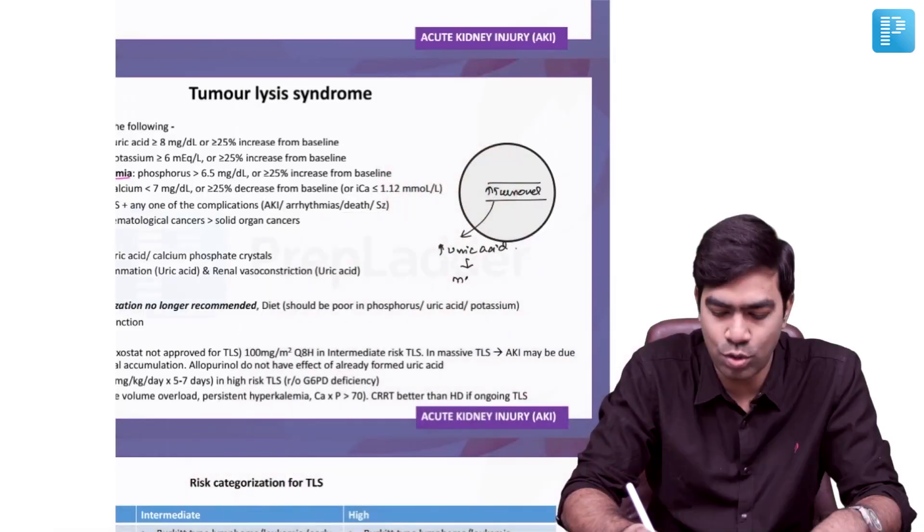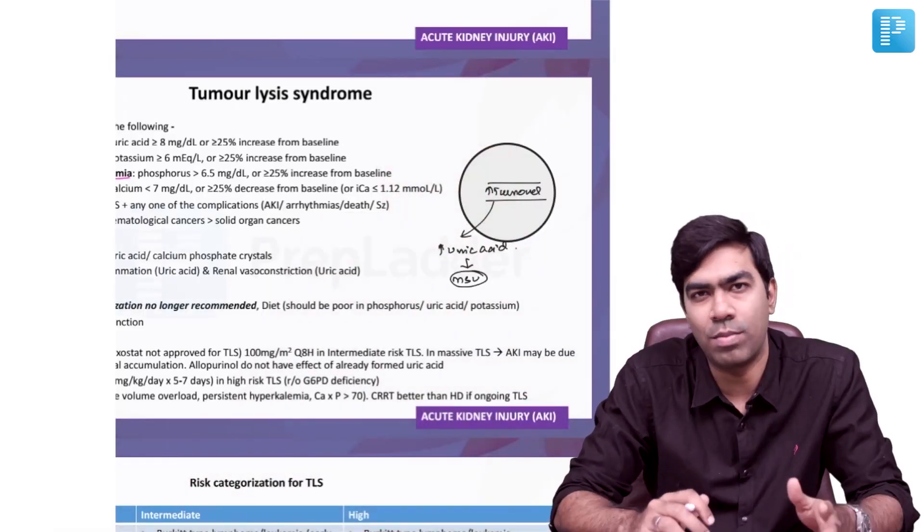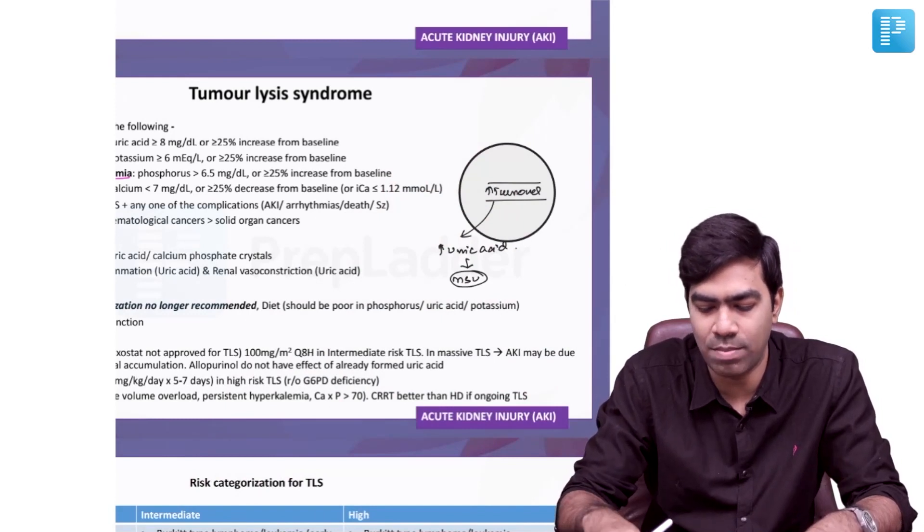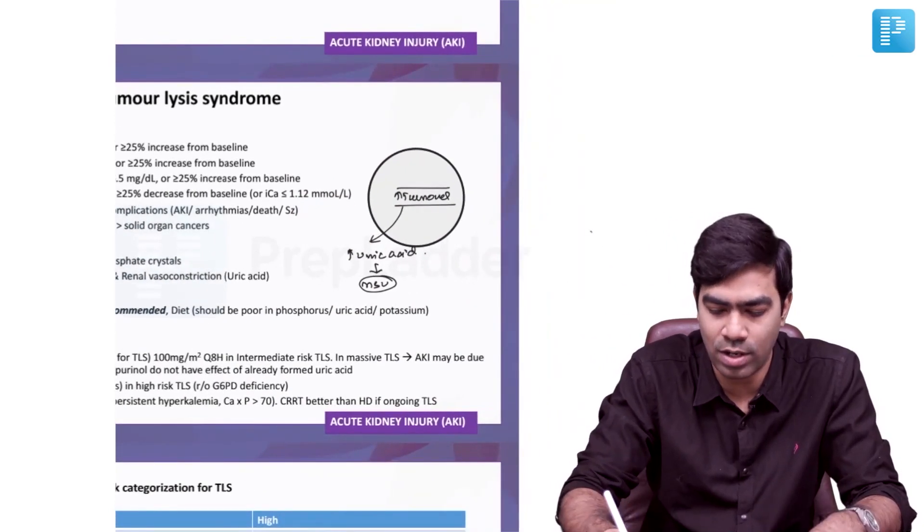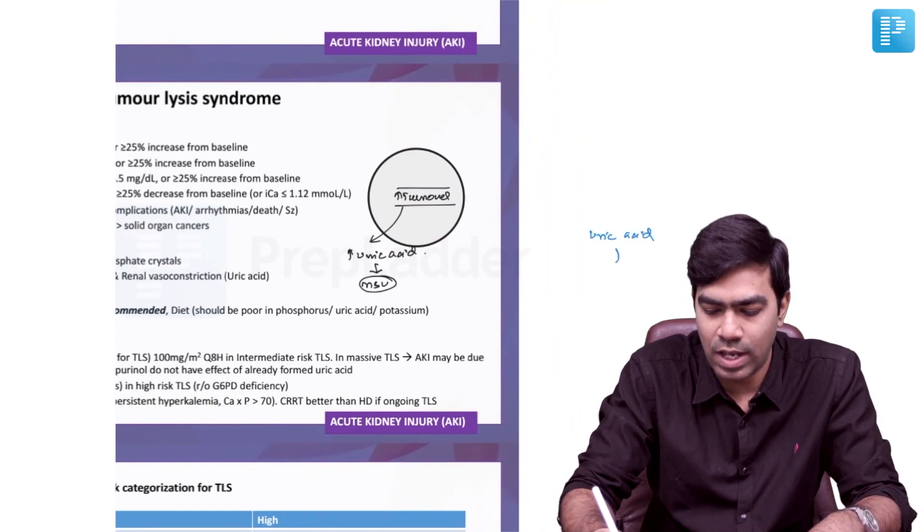They start precipitating as monosodium urate crystals. Remember, humans do not have the ability to convert uric acid to allantoin, which some lower animals do with the help of an enzyme called uricase.